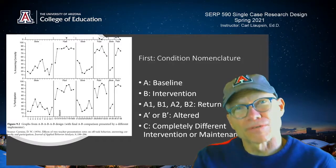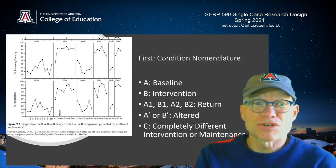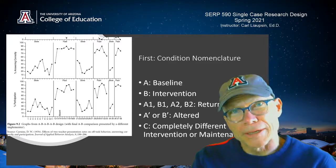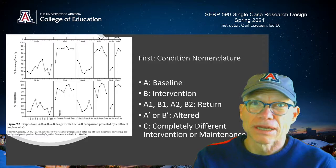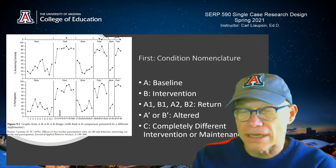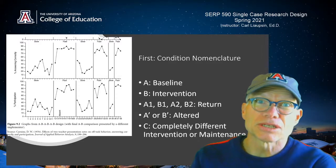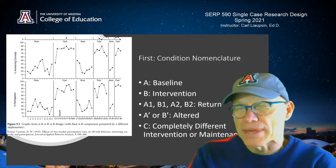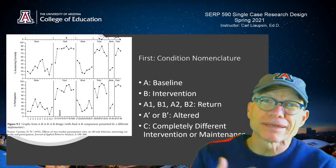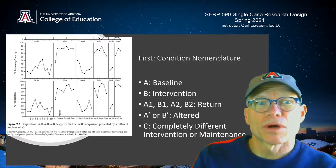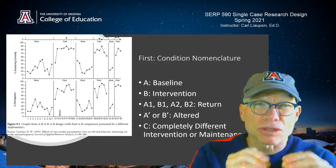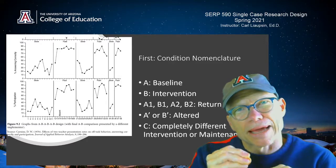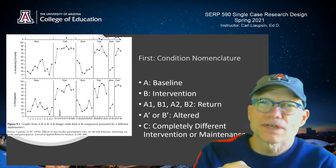B1 is the first intervention condition. Then when you turn around and go back to baseline in a withdrawal design, that's A2 — that's a return to the original baseline condition. B2 is returning again to the intervention condition that you had in place during B1. And if researchers want to make a change to the baseline or intervention conditions along the way, a lot of times they'll add a little apostrophe next to the A or B.